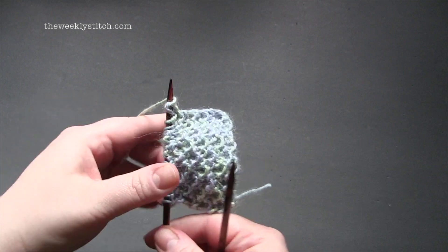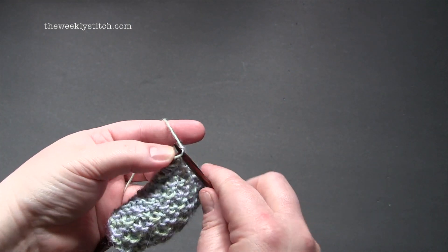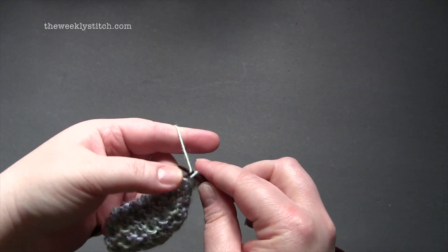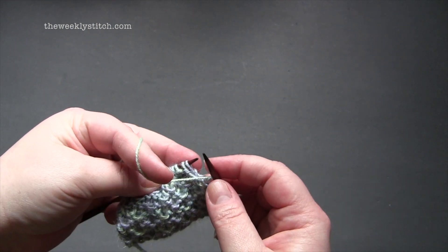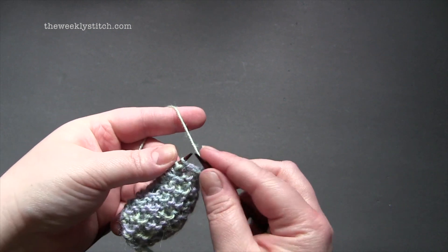For row two, again you'll start by knitting the first three stitches and the repeat is slip one, this time with the yarn in front, knit three.